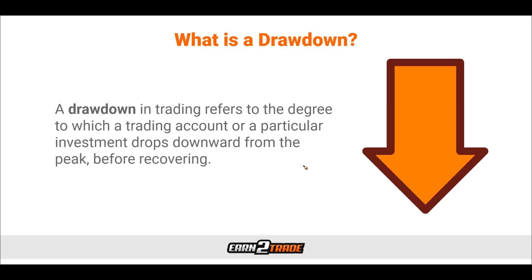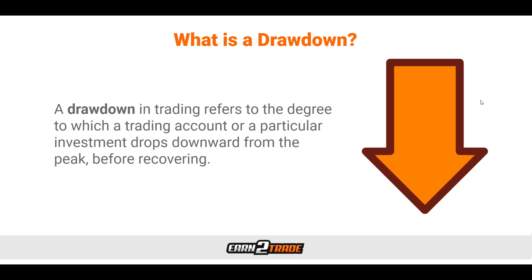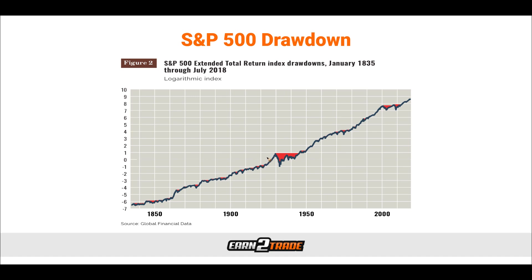Drawdowns are an inevitable part of financial markets and more common than you might think. According to some estimations, the S&P 500 has a 5% to 10% drawdown 12.8% of the time. Over an almost 200-year period of market history, investors had been in a drawdown 74% of the time, and more than 40% of the drawdowns exceeded 20%. It isn't necessarily a bad thing to have a drawdown, but they do need to be managed properly. This is where adequate risk management strategies allow us to survive all of the periods of drawdowns and continue moving forward with our profits.